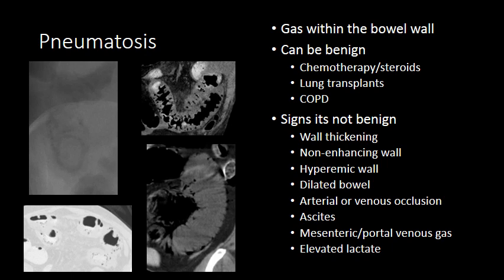Pneumatosis is defined as gas within the bowel wall. You can see in this image on the left-hand side of your screen pneumatosis on a plain film — circumferential gas within the bowel wall and gas tracking along the bowel wall. Pneumatosis can be benign and is often seen with chemotherapy or steroid administration, and in patients who have had lung transplants or chronic obstructive pulmonary disease.